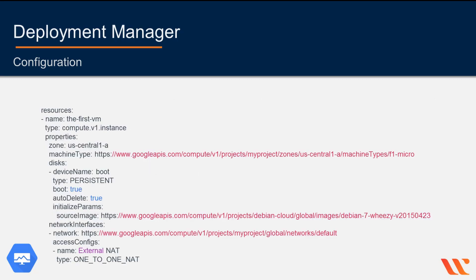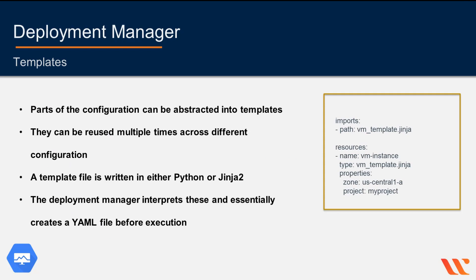This is an example of a configuration file in YAML. Here you can see one resource described with the three required components: name, type, and properties. This configuration file is for deploying a VM instance. You can see the different properties — some of these are required and the others optional. The configuration can contain templates, which are parts of the configuration file that have been abstracted into individual building blocks. Templates are repeatable and can be reused across deployments as necessary. The template file is written in either Python or Jinja 2, and the deployment manager system will interpret each template recursively and inline the results within the configuration file.